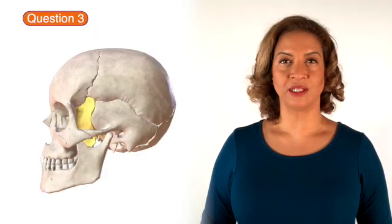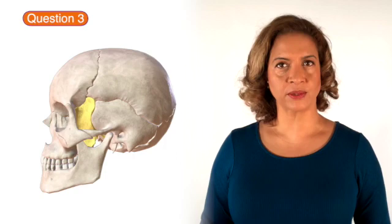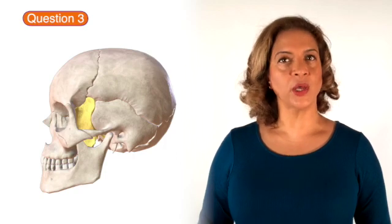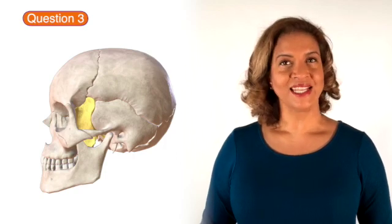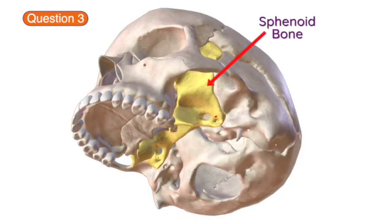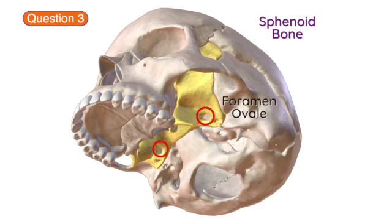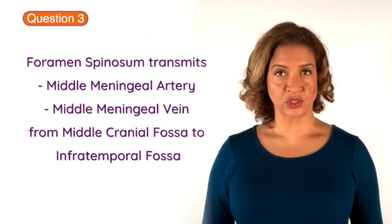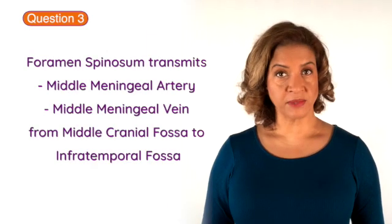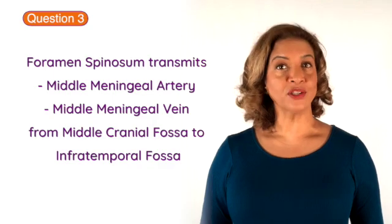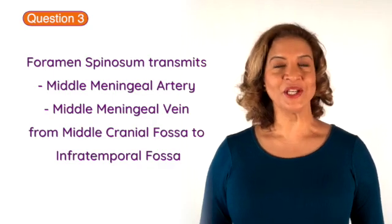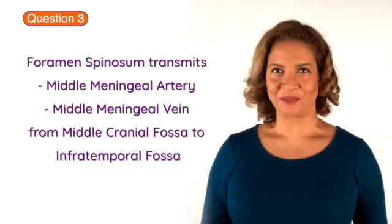Question 3. The foramen spinosum is an opening in one of the skull bones. It is located in the greater wing of the sphenoid bone, just posterolateral to the foramen ovale. The foramen spinosum transmits the middle meningeal artery and the middle meningeal vein from the middle cranial fossa to the infratemporal fossa.